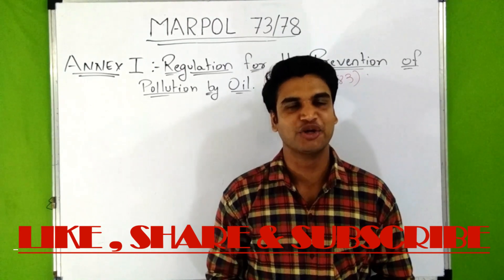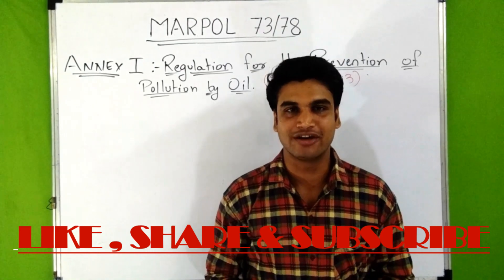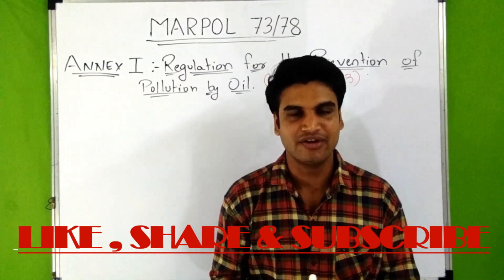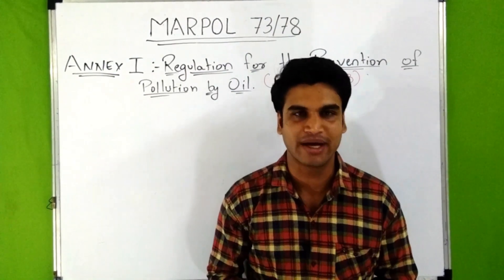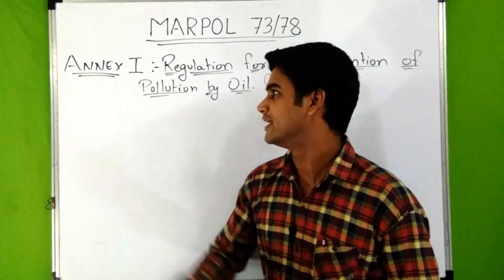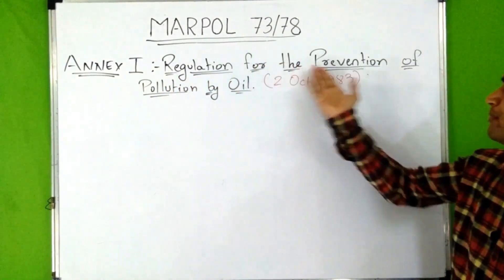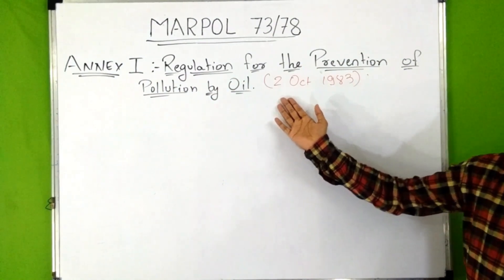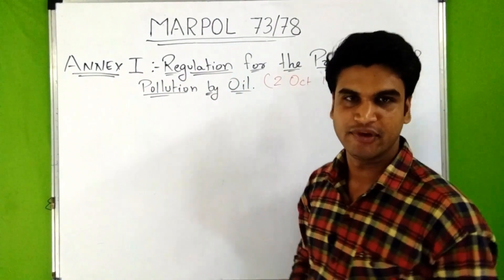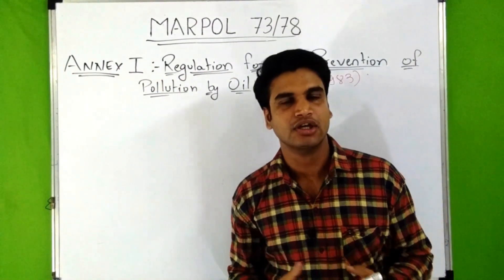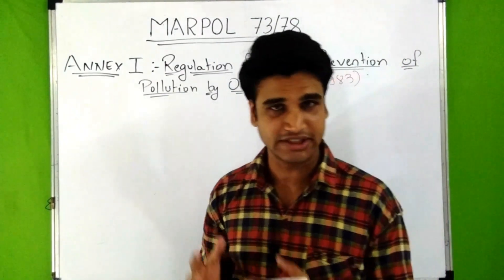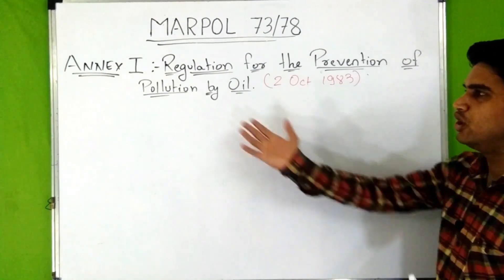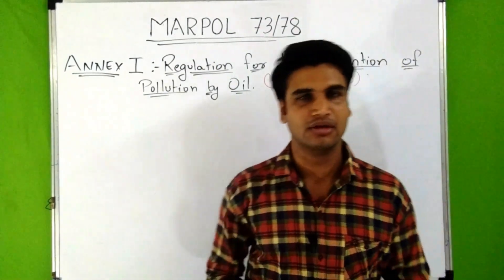Hello everyone. In this video, we will discuss the first annex of MARPOL 73/78 — Annex 1: Regulations for the Prevention of Pollution by Oil. This Annex 1 came into force on 2nd October 1983, and the revised edition entered into force on 1st January 2007.